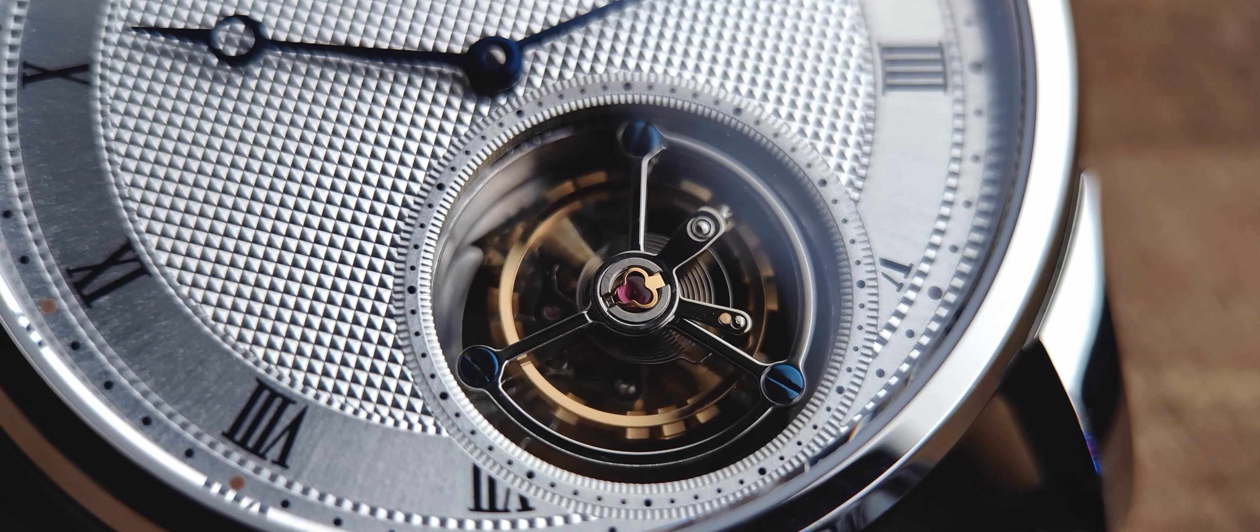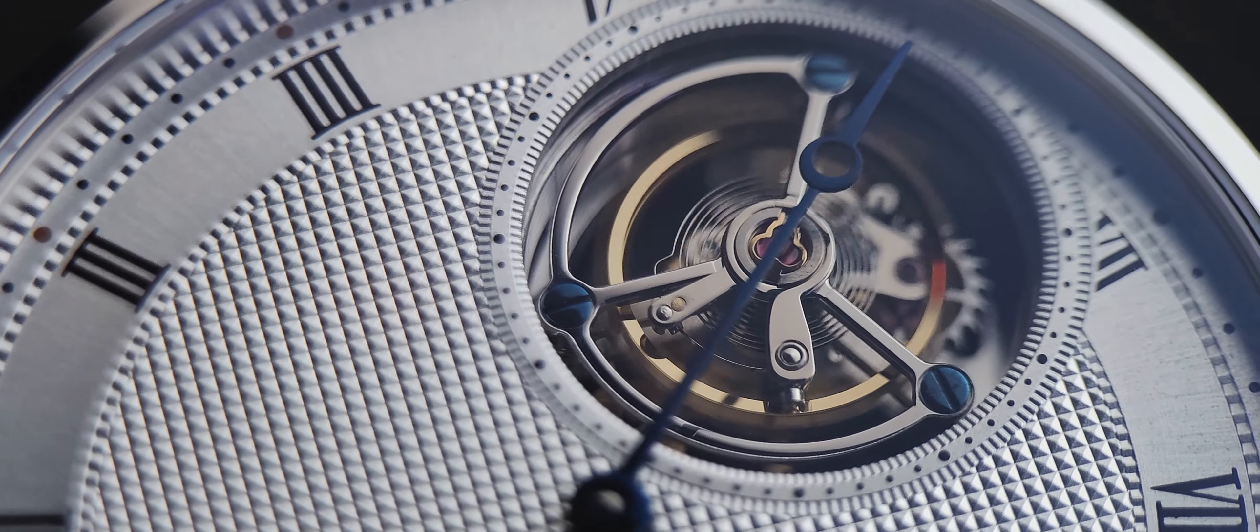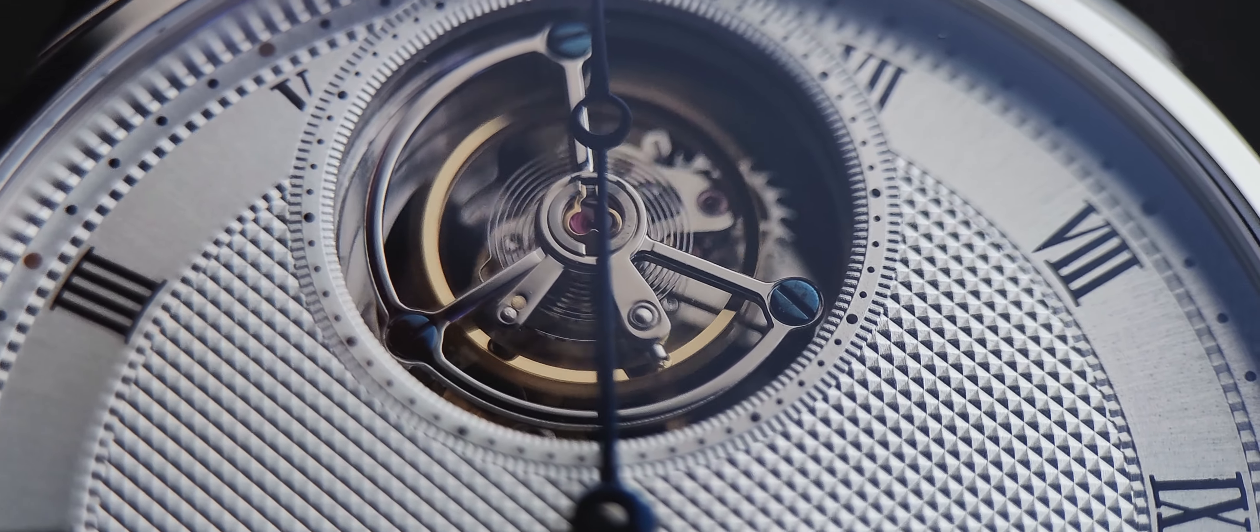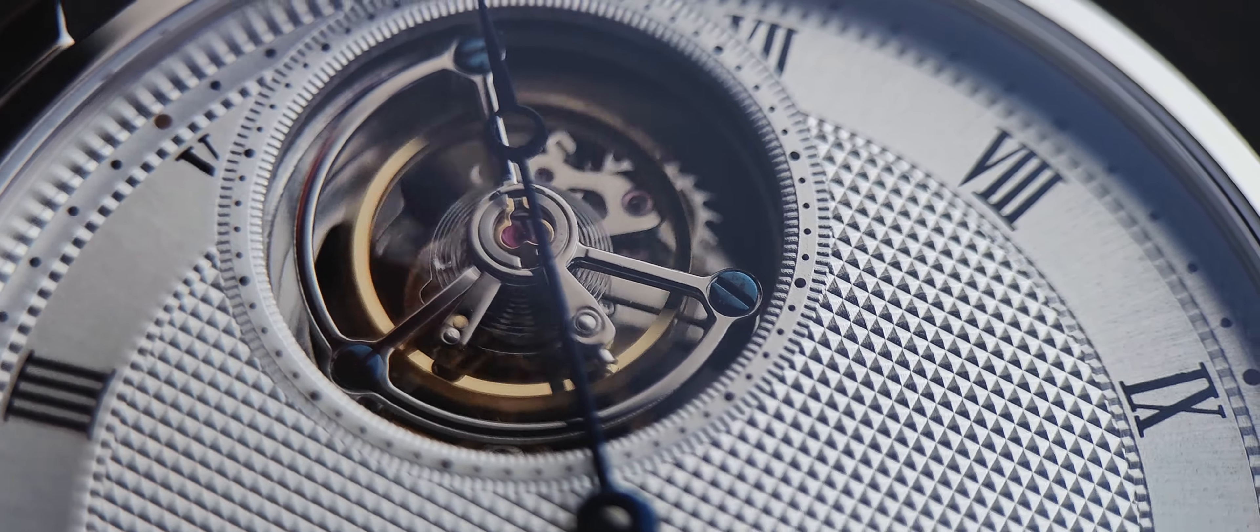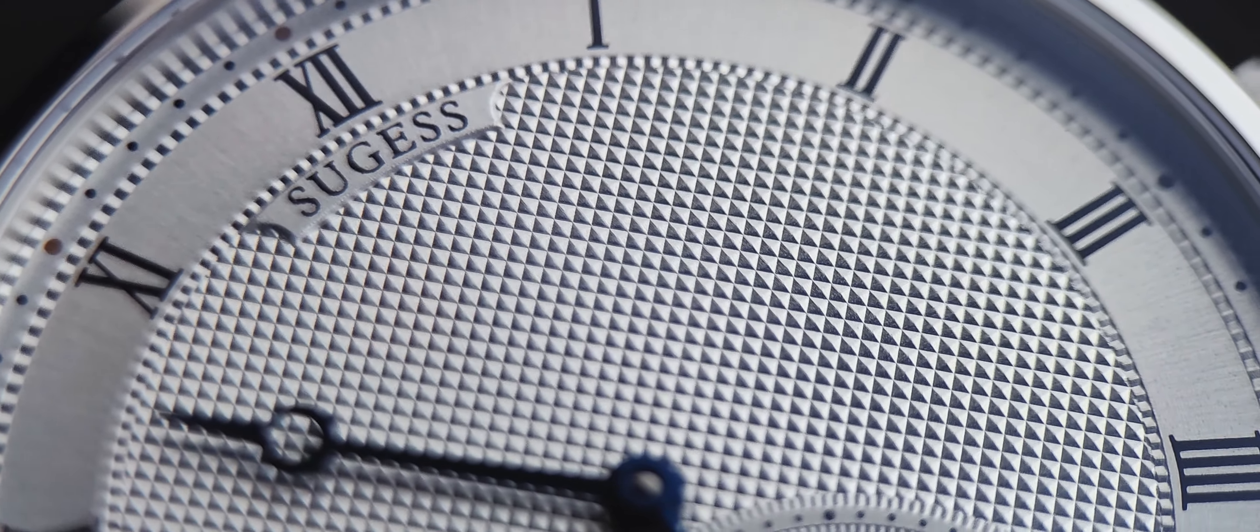Out of all those, I feel in a dress-watch oriented way, the Sugess tourbillon is one of the most, if not the most, value for money tourbillons you can find on AliExpress right now, especially considering that the ST8000 series of movements is one of the more common and reliable cheaper Chinese tourbillons out there. And if you want to buy this watch or some other nice Sugess tourbillons, do check out the links in the description to help support my channel along the way.